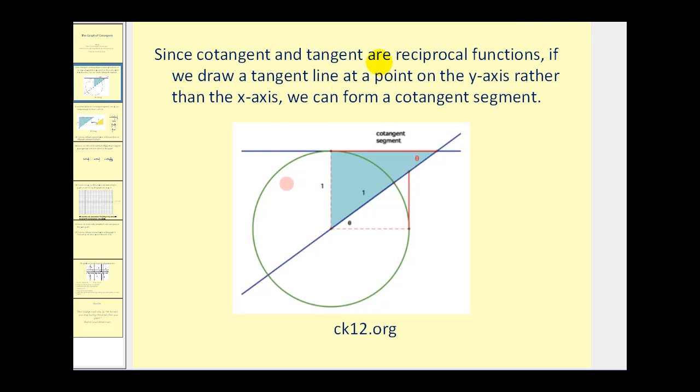Since cotangent and tangent are reciprocal functions, if we draw a tangent line to a point on the y-axis rather than the x-axis, we can form a cotangent segment here in red.